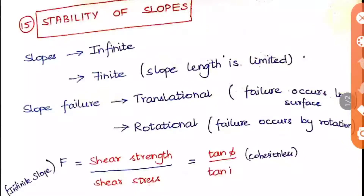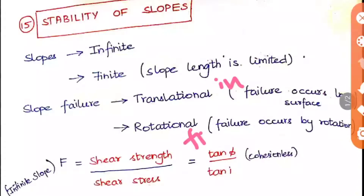Next we will see slope failure. Failure occurs in two types: one is translational, where failure occurs at the surface level in a linear manner, and the next one is rotational, where failure occurs by rotation — a curved slip happens in the soil. Translational failure occurs in infinite slopes and rotational failure occurs in finite slopes.